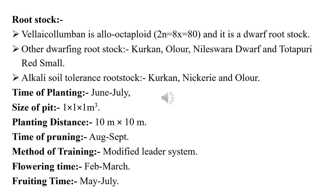The time of pruning/training is August to September. The modified leader system is generally practiced for all fruit types except amla and some climber fruits and pomegranate. Flowering time is from November to March, generally lasting about 15 to 25 days. Peak fruiting time is May to June, but fruiting time extends to July.